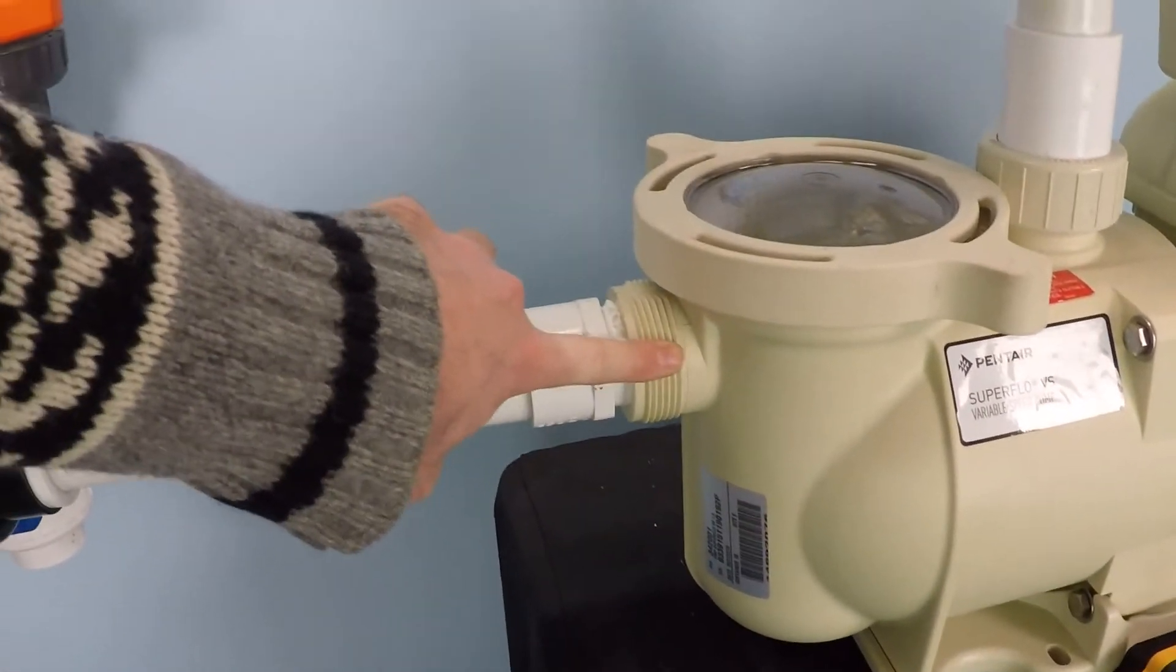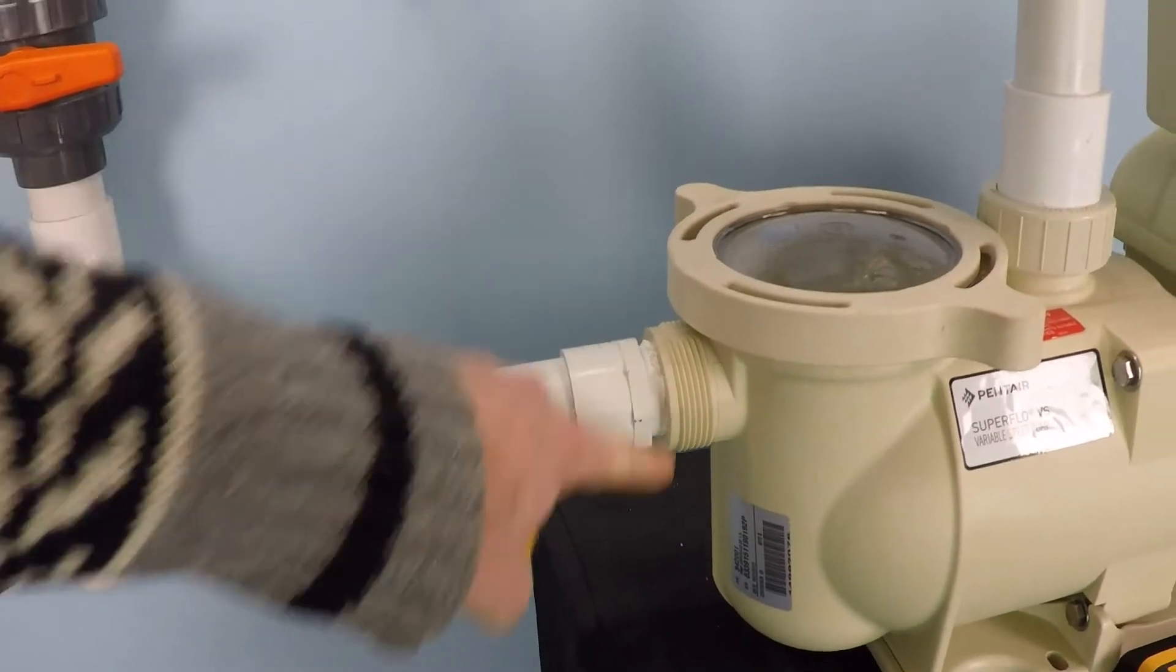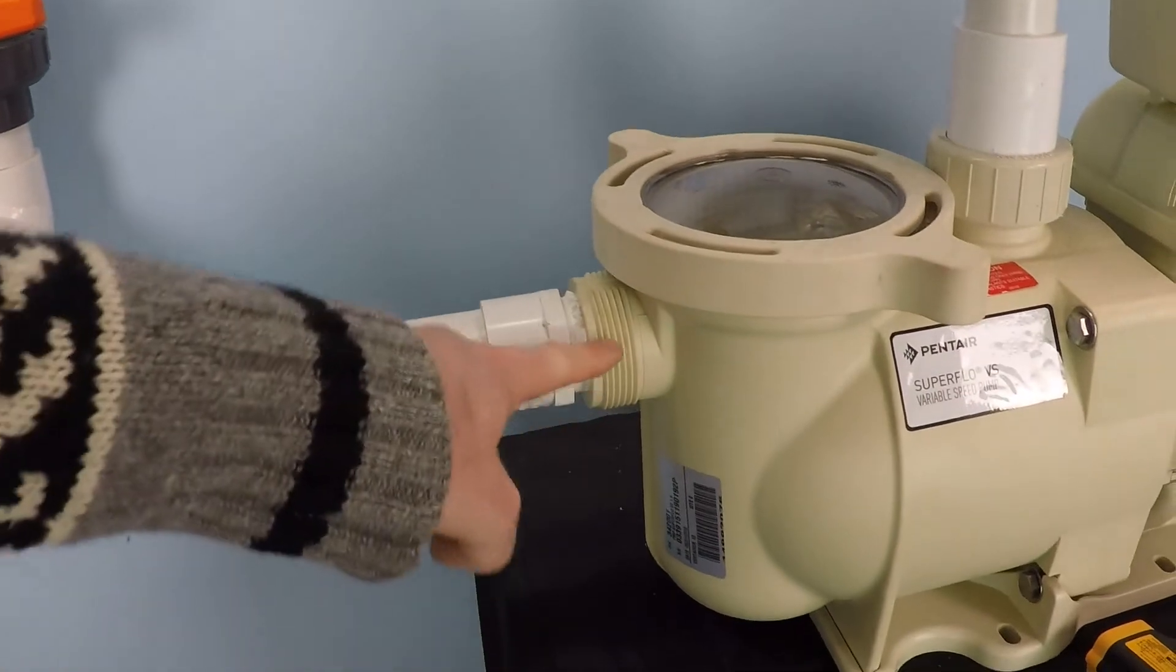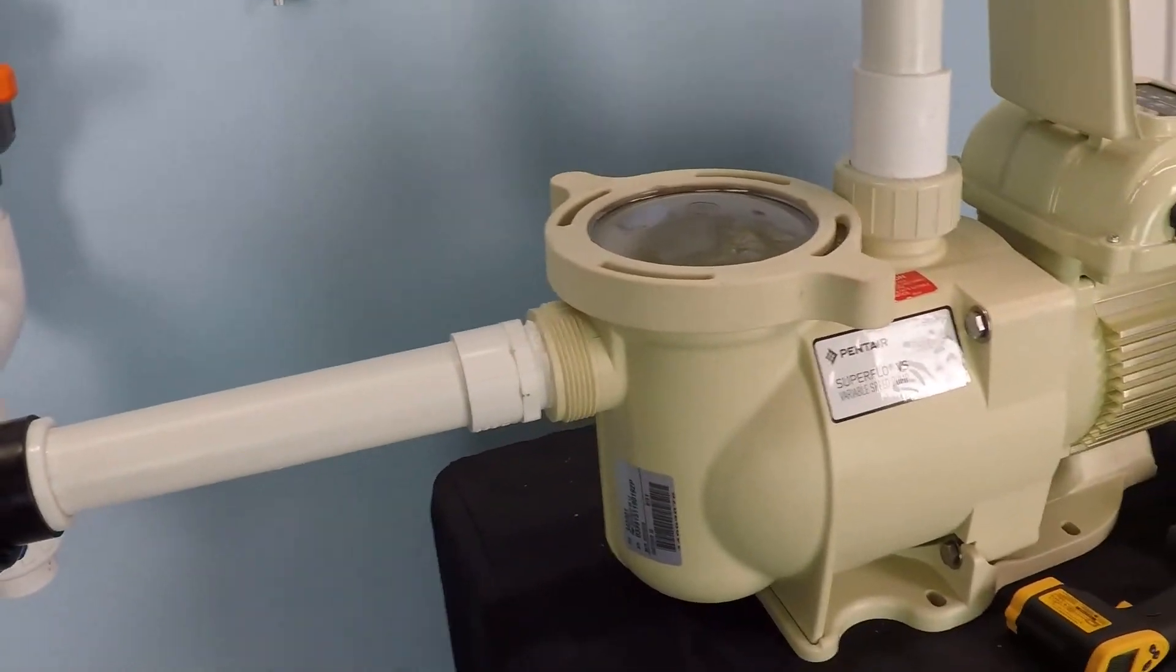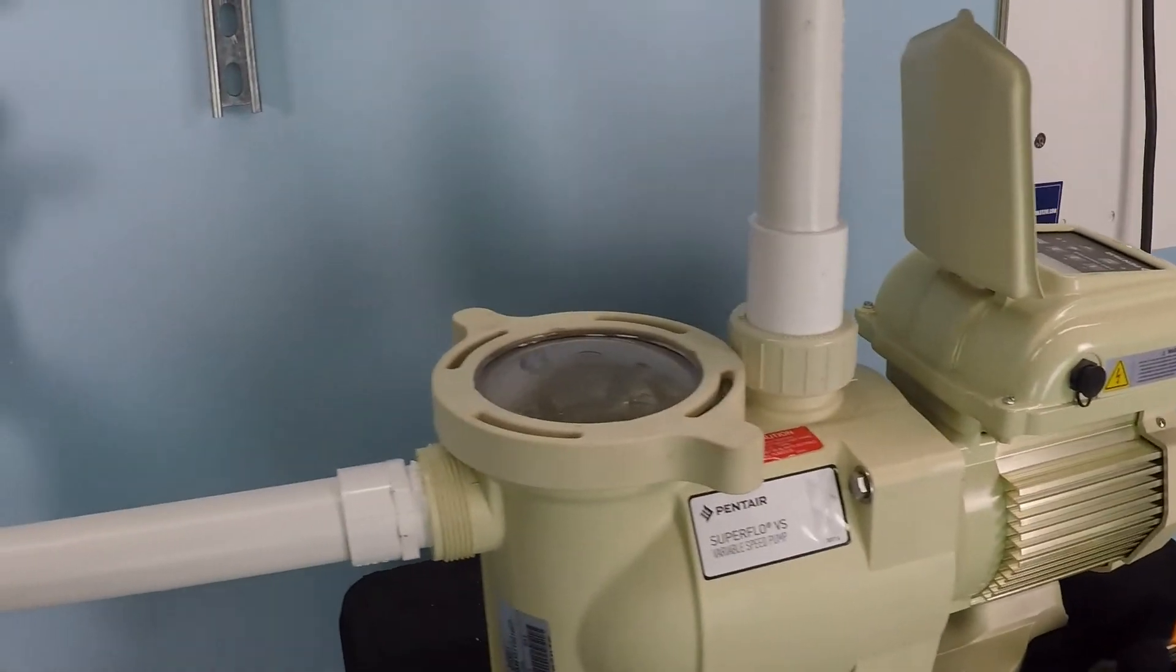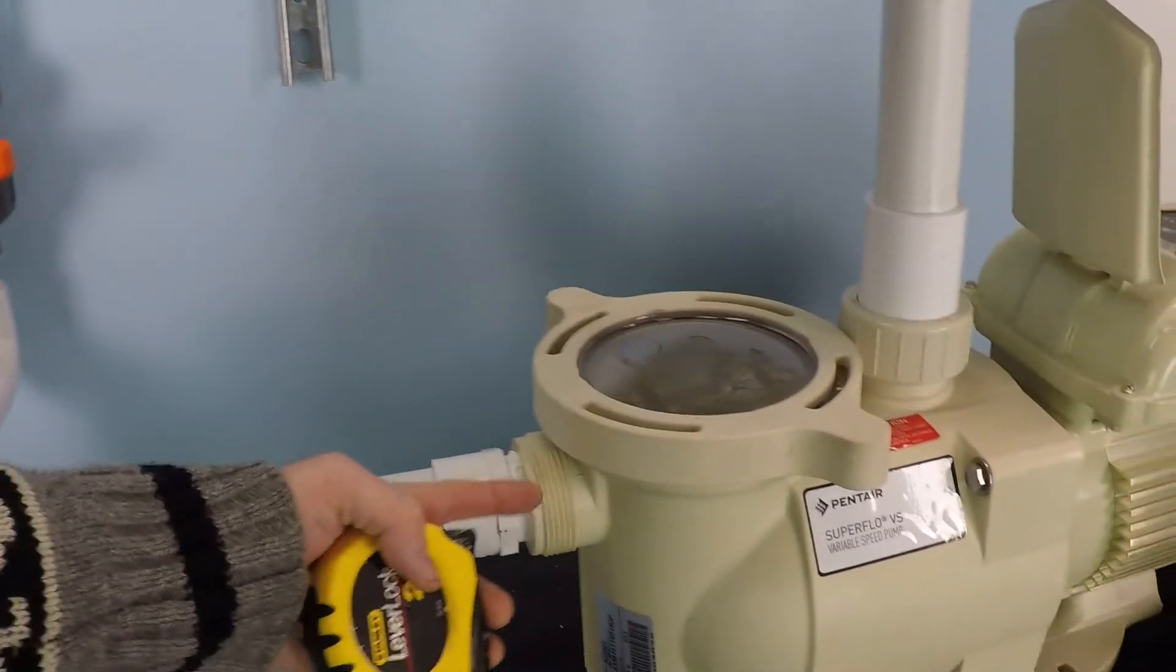These threads on the outside here, that is not a standard thread like you'd use for a two inch female adapter. PVC female adapter would not thread on to that, so that could be another question that you have. That thread in particular is made for these Pentair unions that it comes with.